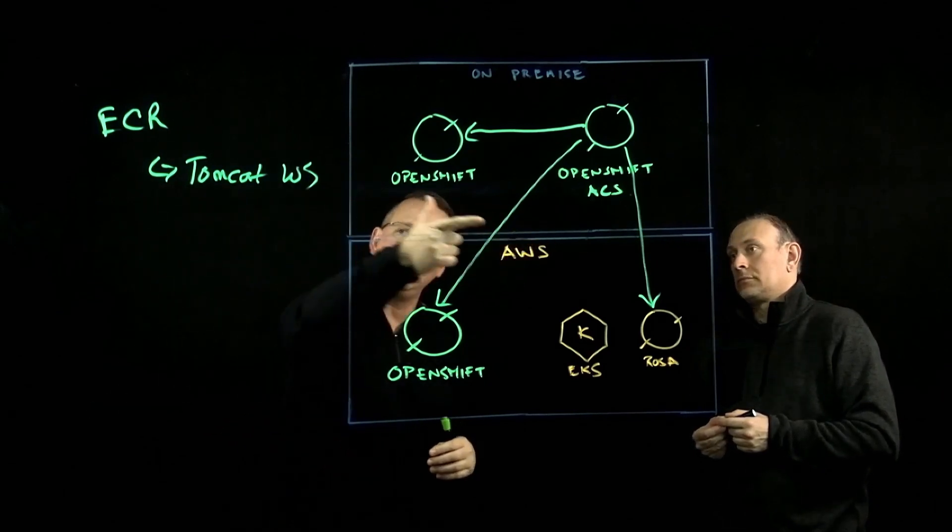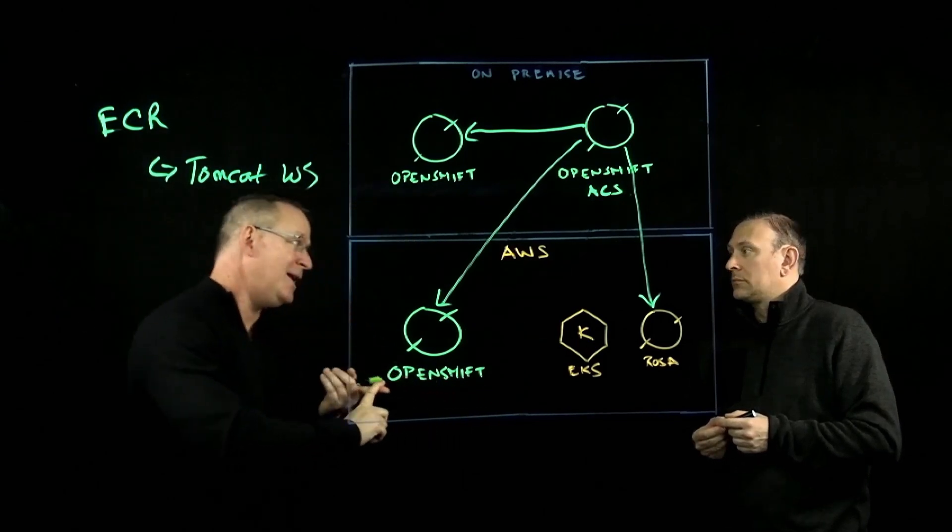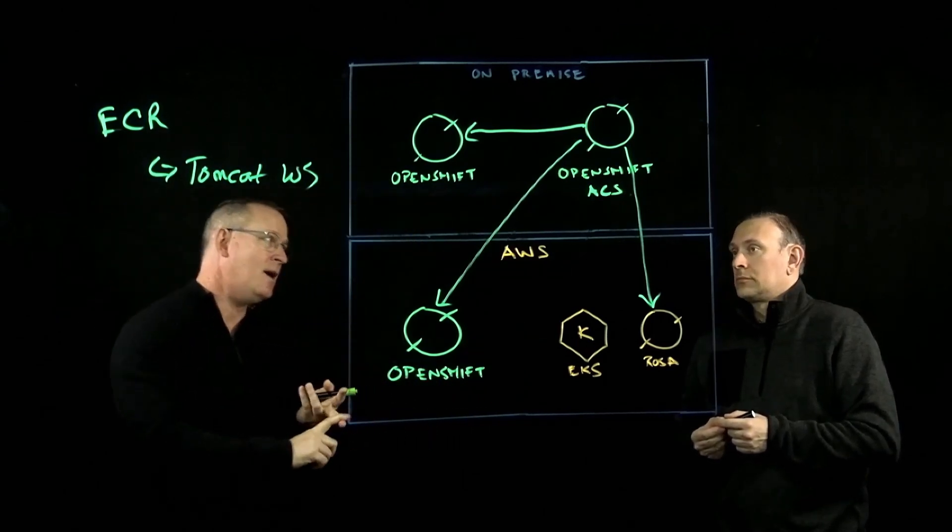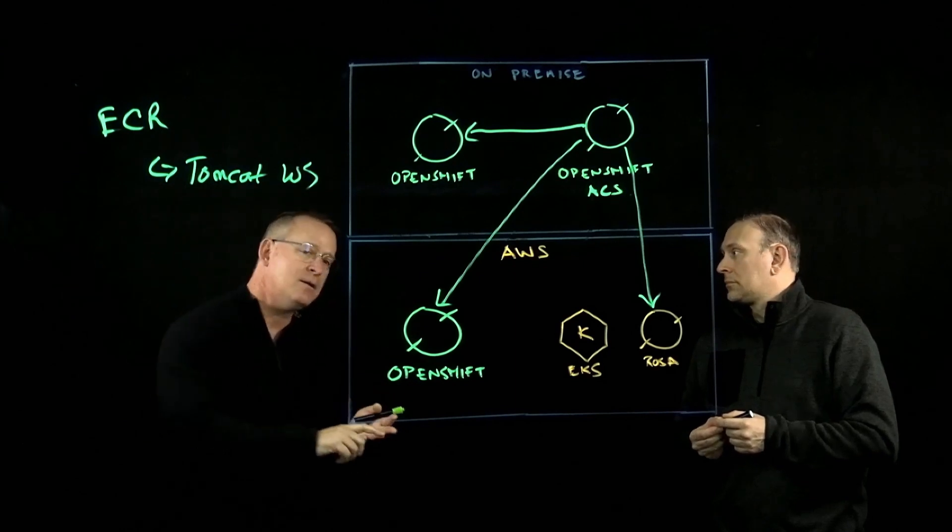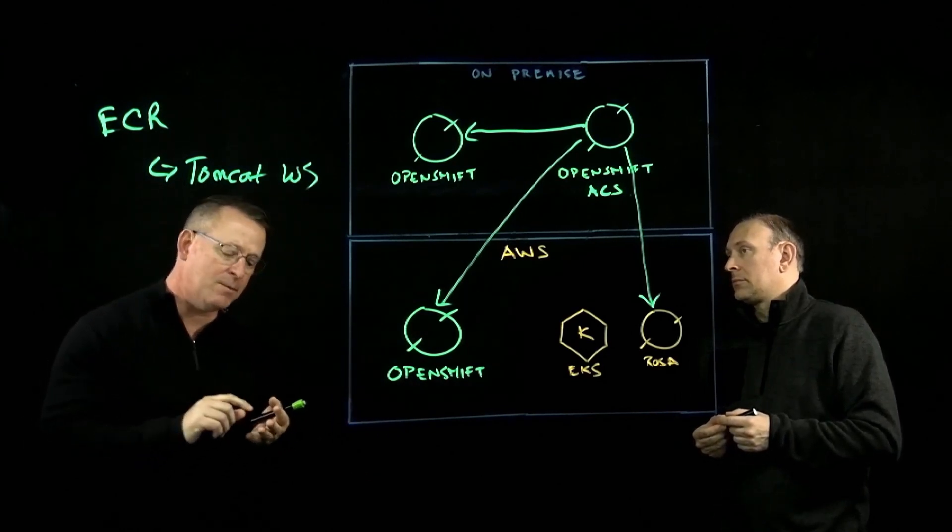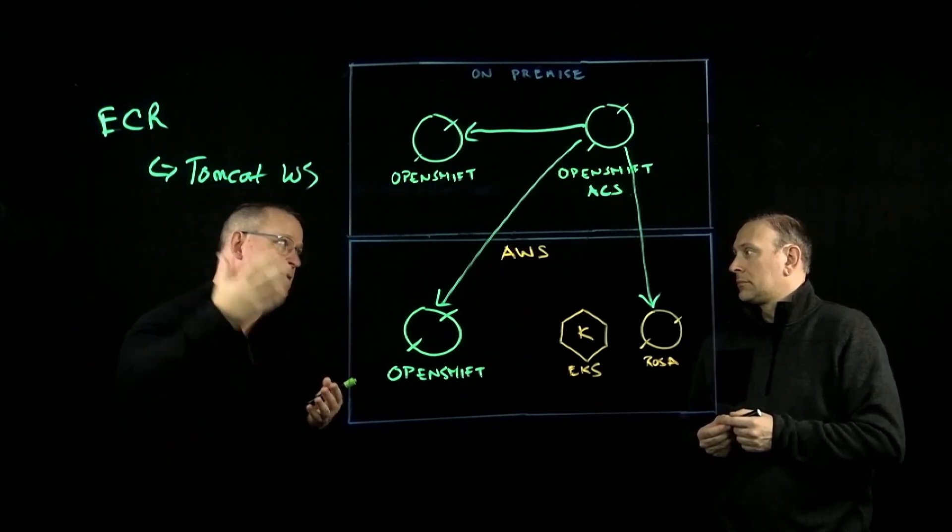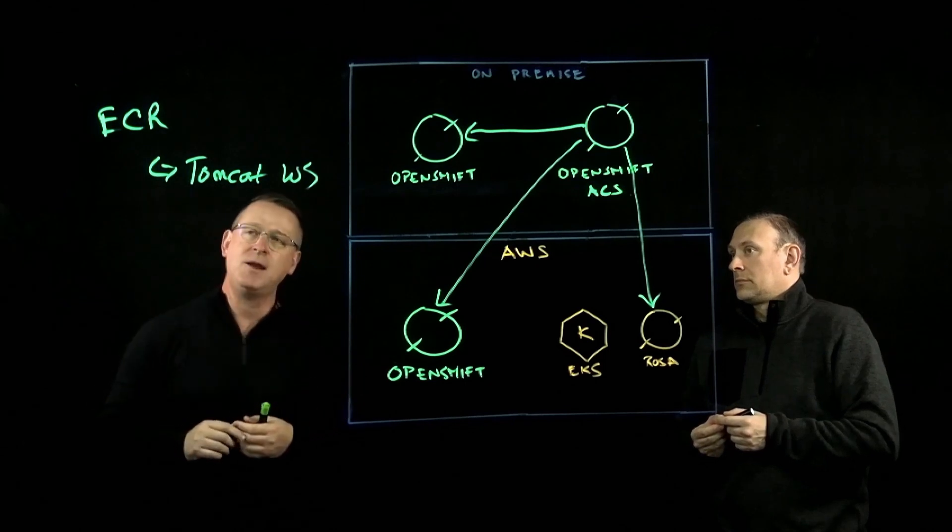Well, ACS can be used to introspect into that container. It can analyze, for example, the internal operating system. It can analyze the packages and the libraries that are there. It can automatically analyze if any of those packages or libraries have known vulnerabilities. And it can do the same thing for the things that are in the container, such as your web servers or your application servers.